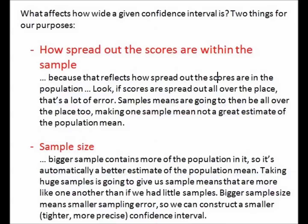Sample size also impacts the confidence interval. A bigger sample contains more of the population, so it's automatically a better estimate of the population mean. Taking larger samples gives sample means that are more similar to one another than small samples. Larger sample size means smaller sampling error.